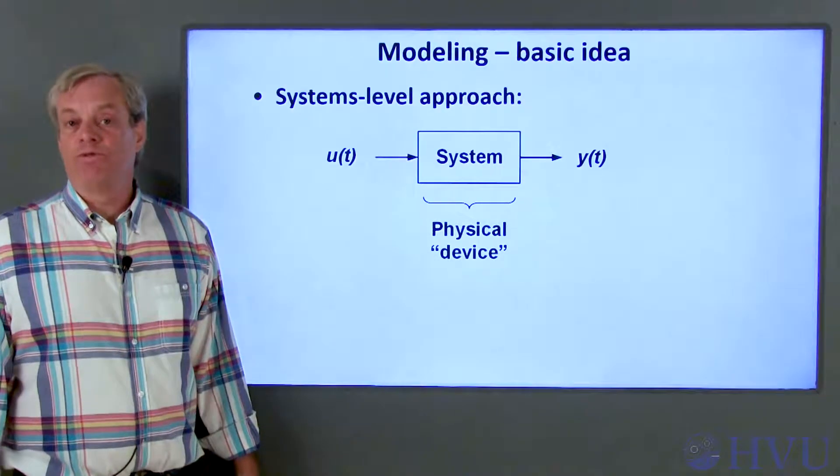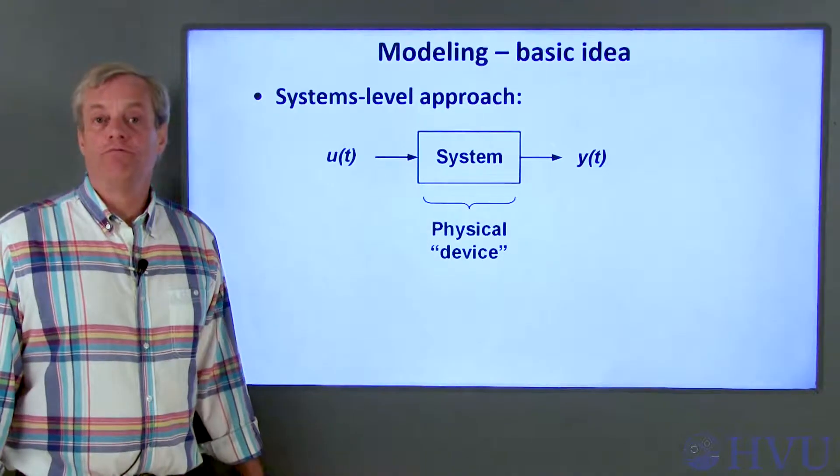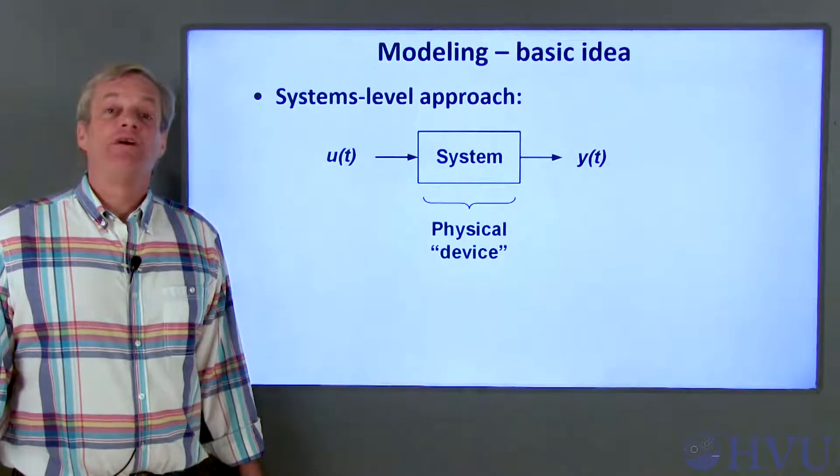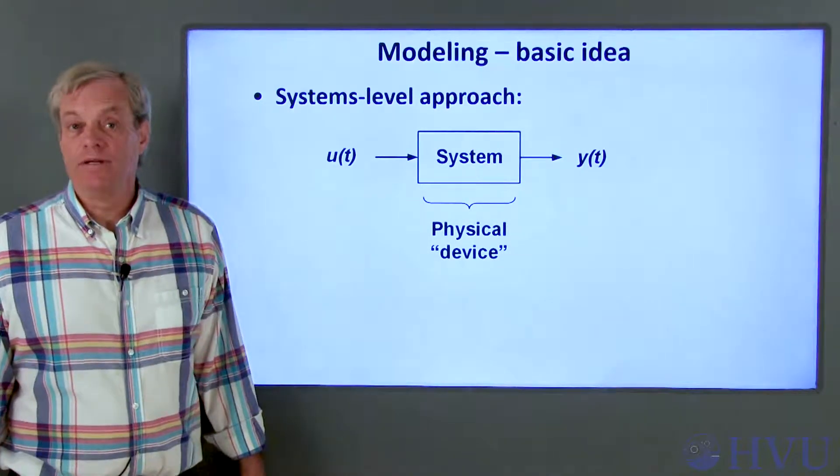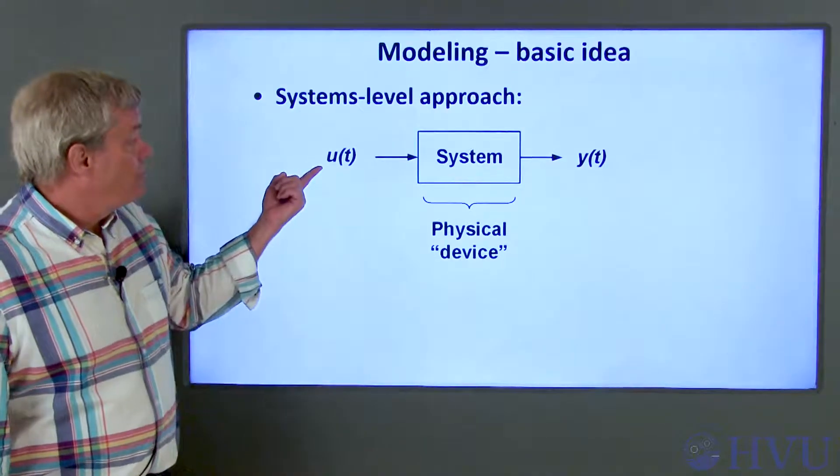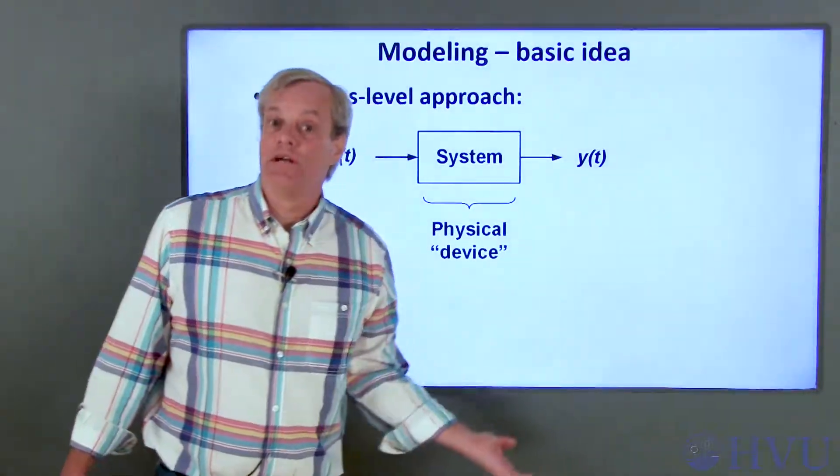Signals are physical parameters like voltage, current, pressure, flow rate, or heat flux. They're the way that systems interact with each other and with their environment. In this block diagram, u(t) and y(t) are generic signals.